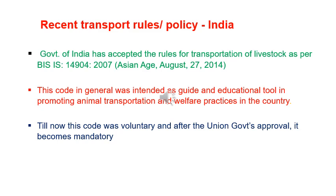Recent transport rules and policy in India: the Government of India has accepted rules for transportation of livestock as per BIS standard IS 14904-2007, accepted in 2014. This code was originally intended as a guide and educational tool to promote animal transportation and welfare practices. After the union government's approval, it became mandatory. Details will be discussed in Part 2 of this lecture.